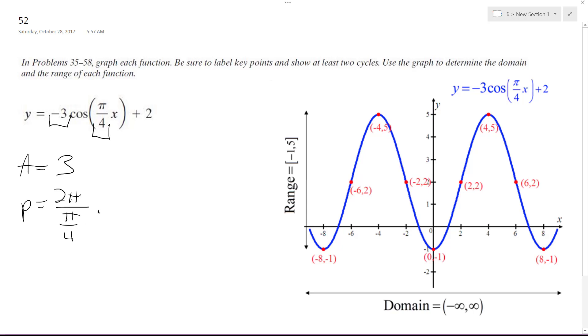So times... this becomes 2π times 4 over π. Pi's cancel out, and we get a period of 8. So you can see from here to here, it's 8.